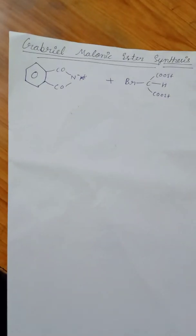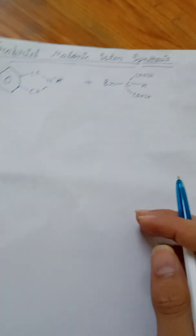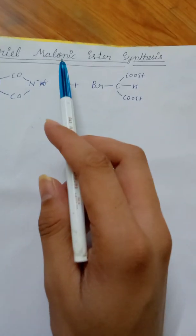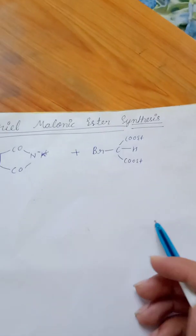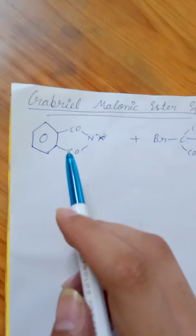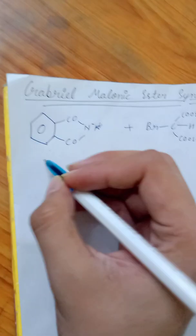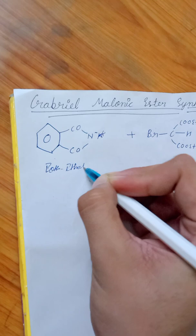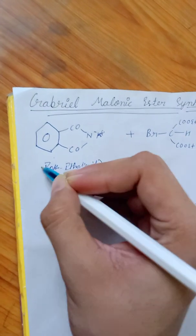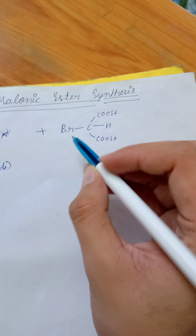Welcome students, so today we are doing malonic ester synthesis. This is one of the most important syntheses of amino acids in which we are taking potassium salt of phthalimide and reacting it with a malonic ester.